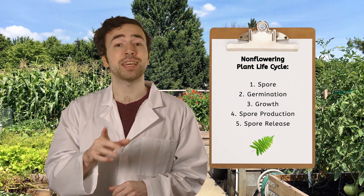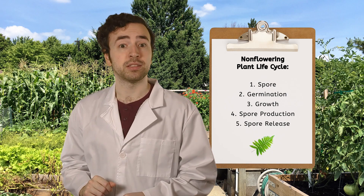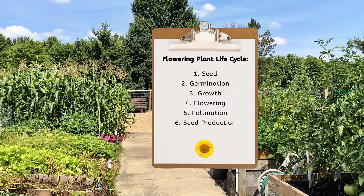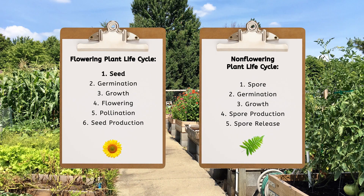Let's take a look at the stages for each and see what's different. Flowering plants begin as seeds, and non-flowering plants begin as spores. Then they both germinate and grow. But after that, our flowering plants will flower, and those flowers need the help of a friend to pollinate. Last, they will form seeds. After growing, non-flowering plants will produce and release spores all on their own, without the need for a pollinator.